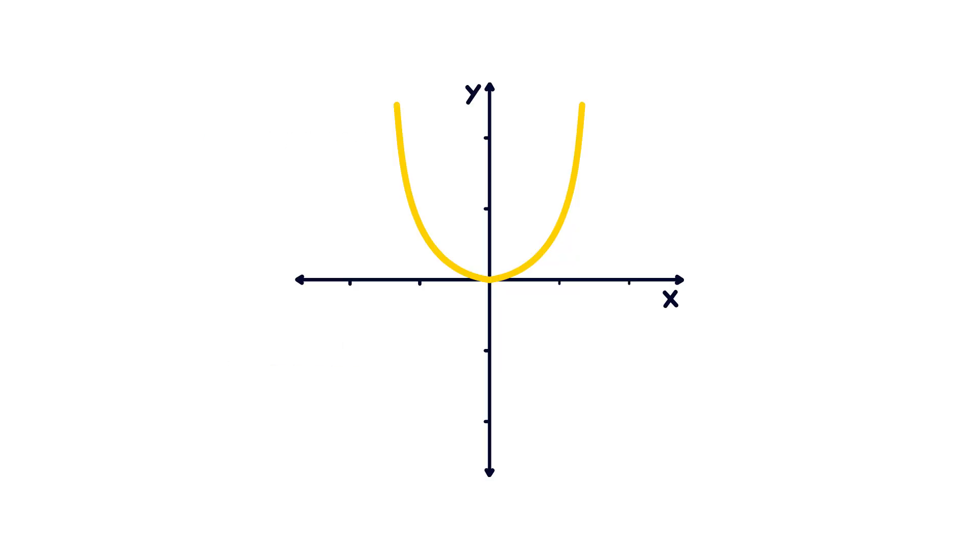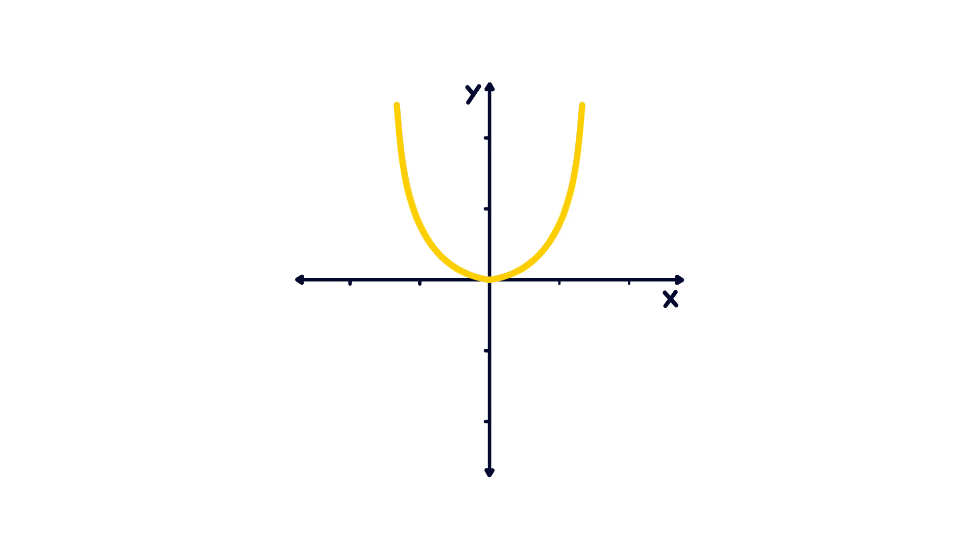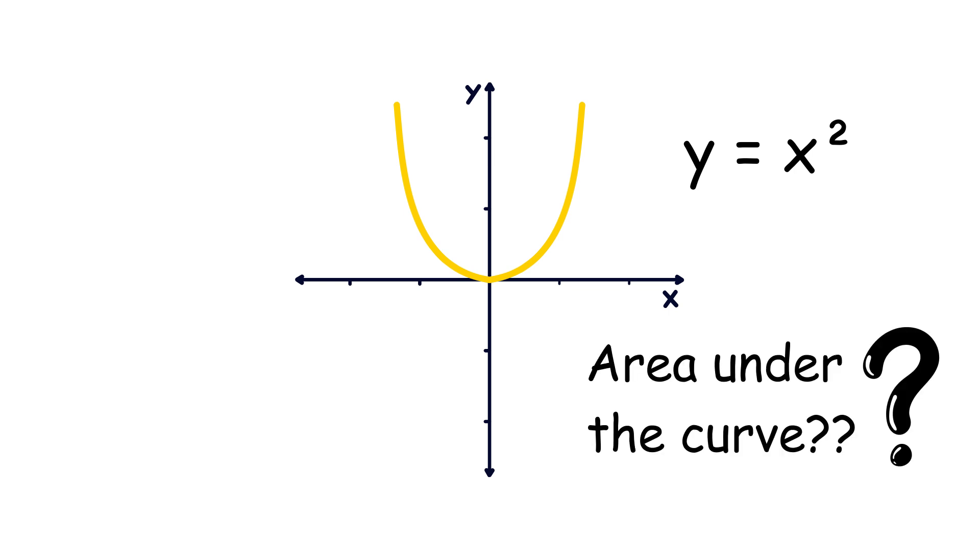But what happens when the shape isn't simple, like a smooth U-shaped curve? Say y equals x power 2. How do we find the area under that curve?